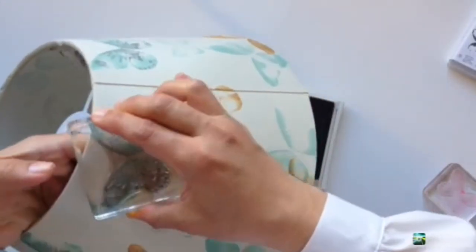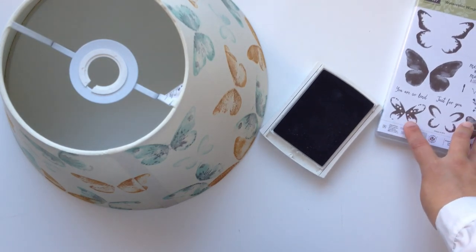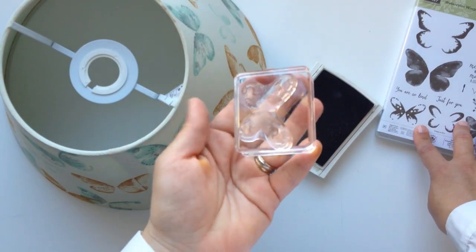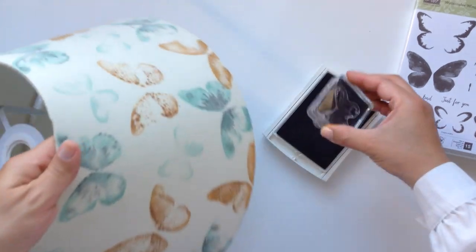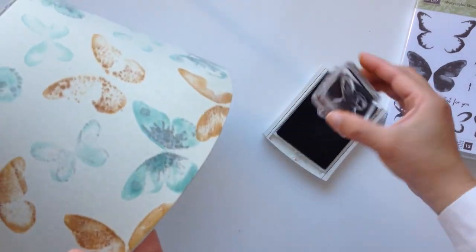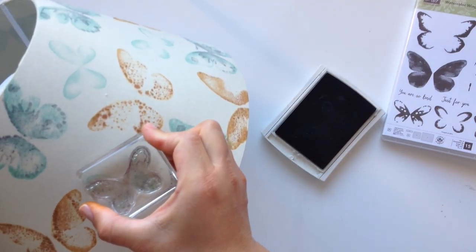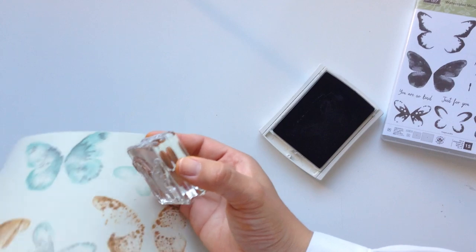When I finish with all the larger butterflies, I'm going to grab this stamp here and do the same with Smoky Slate on top of the smaller butterflies. So I'm going to apply a two-step stamping technique as well on these butterflies. Just keep doing it.